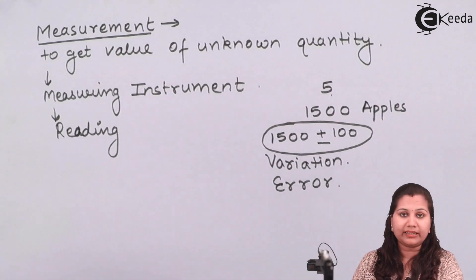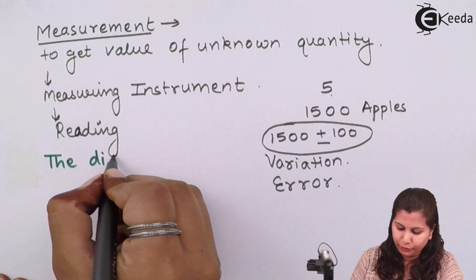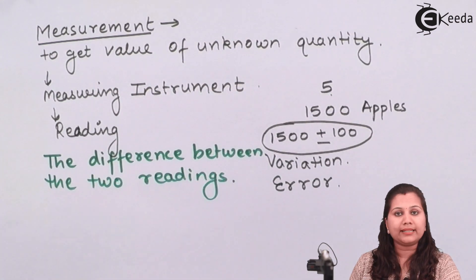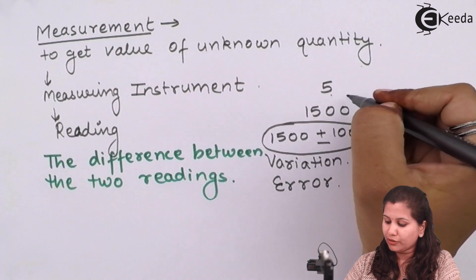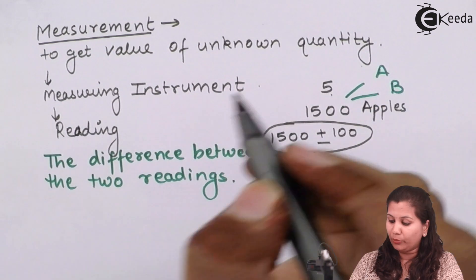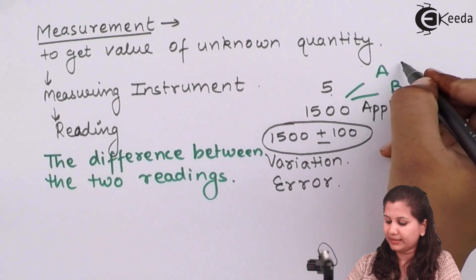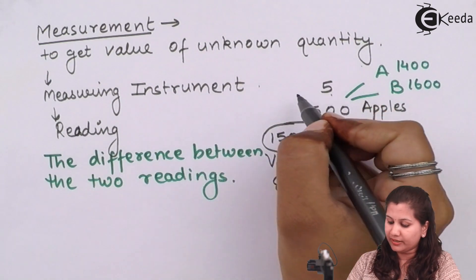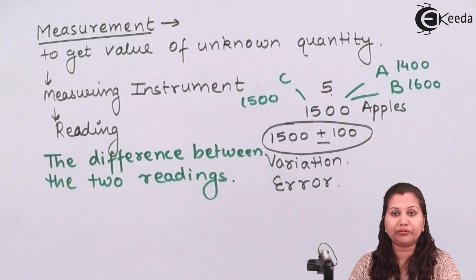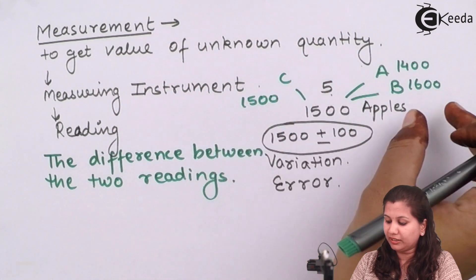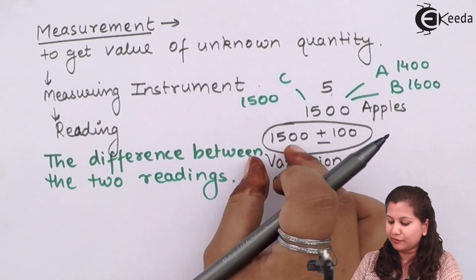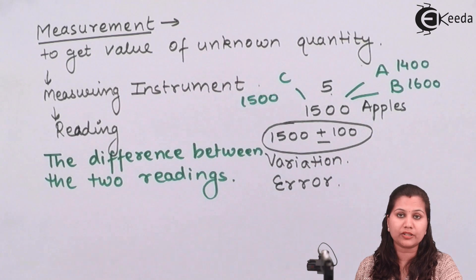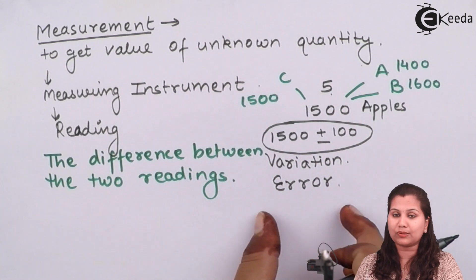We can define this variation as the difference between the two readings. Taking the same example of 1500 apples, suppose there are two observers A and B. When A counts the apples he gets 1400, and when B counts he gets 1600. There is another observer who counts exactly 1500. So we are getting values in the range 1400 to 1600, and we can define it as 1500 plus minus 100 apples. That difference is called the variation.